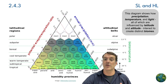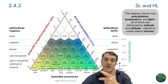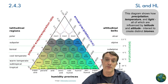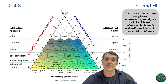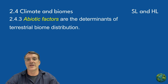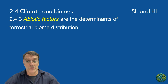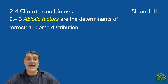Three main factors determine biome distribution: precipitation, temperature, and insolation — that's the amount of solar radiation reaching Earth's surface. These abiotic factors create the conditions that shape plant and animal communities, resulting in distinct biome types across the globe.